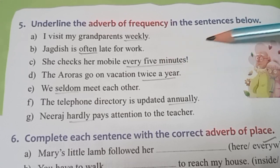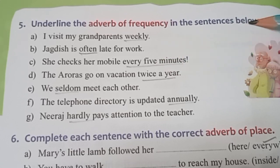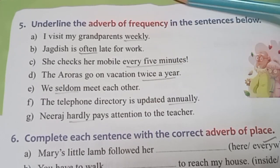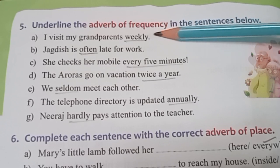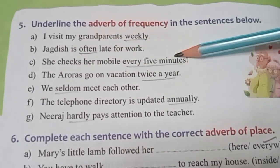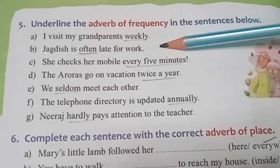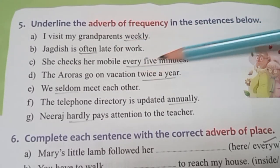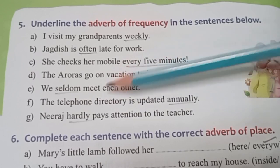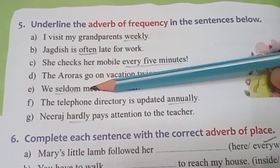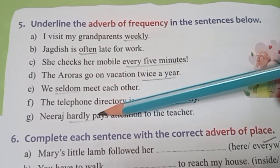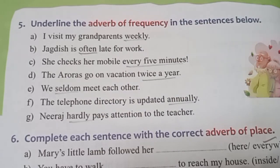Underline the adverb of frequency in the sentences below. For A, it is weekly. For B, the answer is often. For C, it is every five minutes. For D, it is twice. For E, the adverb is seldom. For F, it is annually. For G, it is hardly.